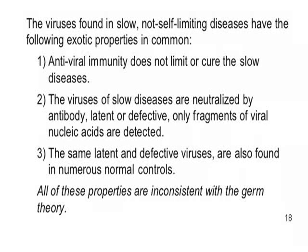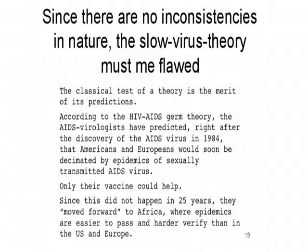Worst of all — which even Robert Koch would have immediately objected to — the same latent and defective viruses are also found in numerous normal controls. We don't talk about this much, but we flaunt 40 million HIV positives in the world while only a couple of million die from AIDS — meaning 38 or 39 million are doing very well, particularly in Africa. All of these properties are inconsistent with the germ theory. If the microbe were truly the cause, the antibody would stop it and cure the disease, and the viruses would be actively replicating and killing the host. Since there are no inconsistencies in nature, the slow virus theory must be flawed.